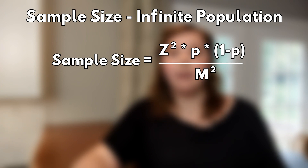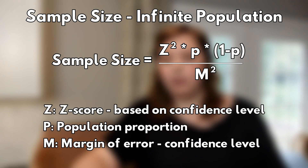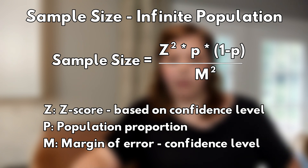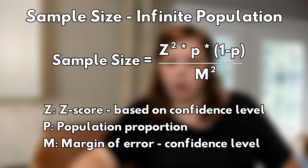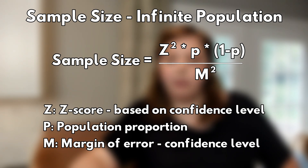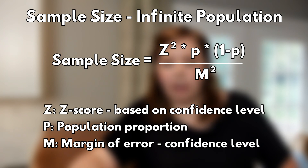The formula for sample size of an infinite population is z² × p × (1 − p) / m². Z is the z-score, which we can get from a table based on our confidence level. The confidence level is the probability that the value of a parameter falls within a specified range of values. So let's say we want the result of analyzing our sample to give us 95% confidence that our sample matches the total population — in that case we'll use a z-score of 1.960. P is our population proportion and we assume this to be 50%. M is our margin of error; we want to pick a small amount that allows for some miscalculation or change in our circumstances — 5% is fairly typical. Let's take all these values and plug them into our formula.